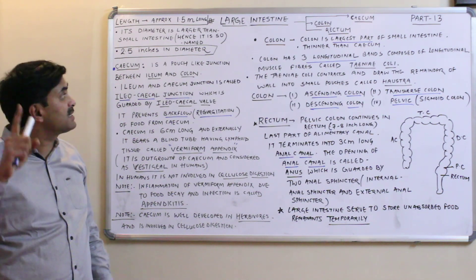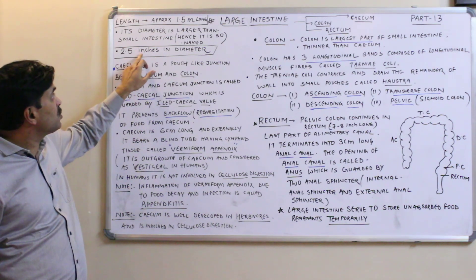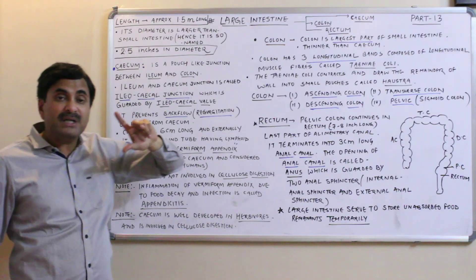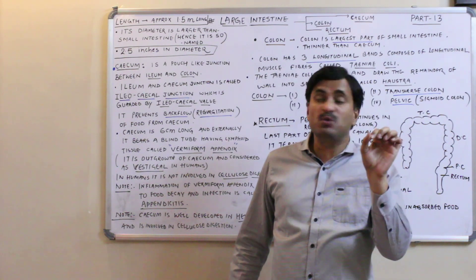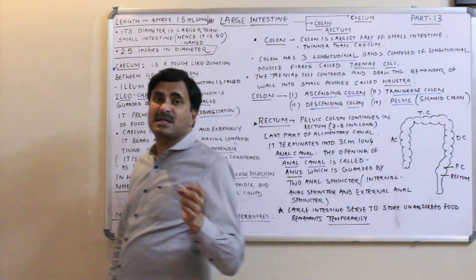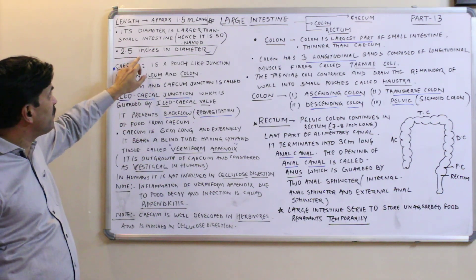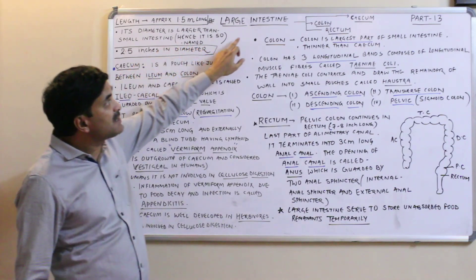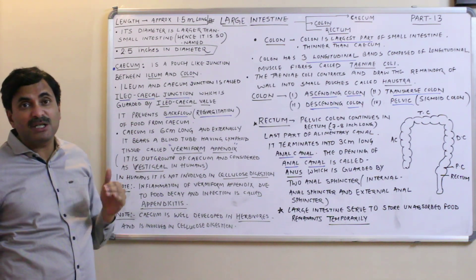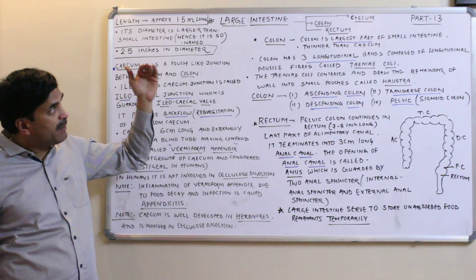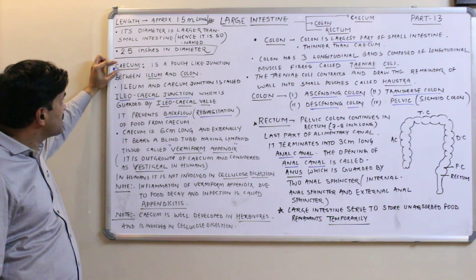The large intestine is named for its diameter, which is more than that of the small intestine. Its diameter is approximately 2.5 inches, though not uniform throughout — it may vary at some places, but on average it is 2.5 inches. The large intestine is divided into three parts: cecum, colon, and rectum.